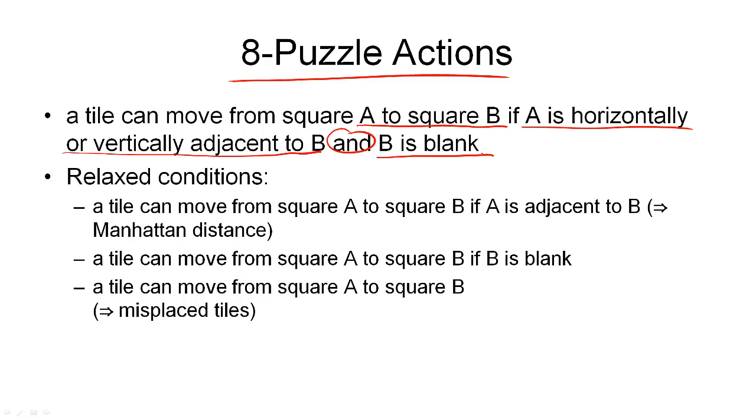A tile can move from square A to square B, if A is horizontally or vertically adjacent to B, and B is blank. The condition we have here is a conjunction of two sub-conditions. That should tell us how we can build a relaxed condition quite easily, by dropping one of the two parts, or both of them.